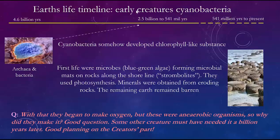In part two this is where we left off — the development of cyanobacteria. The bacteria and the archaea were the very earliest living forms, and some of these bacteria began to form a chlorophyll-like substance and produce oxygen. The first life forms were microbes that climbed on rocks and made mats, called blue-green algae, and the rocks they covered were called stromatolites. They used an early form of photosynthesis by eroding rocks and obtaining the minerals needed for the process.